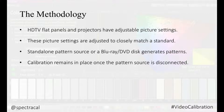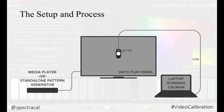Because the display's own internal settings have been adjusted or calibrated, the calibration remains in place once the pattern source is disconnected. The pattern source generates the patterns on the screen. The meter takes readings of the luminance and chromaticity values for the display's performance for that pattern. CalMAN software uses the meter readings to inform the user, with charts and graphs, of the display's performance and the degree to which it varies from the selected standard.